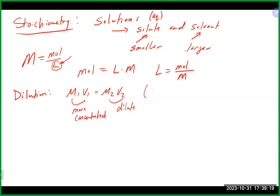There's a more generic version: C1V1 = C2V2, where C stands for concentration on both sides. Molarity is the most common, but you can use any concentration unit as long as the same units are on both sides — percent mass-to-mass or percent mass-to-volume, for example. This is also one of the only equations where you can leave the volume in milliliters, and it will work out correctly if both volumes are in milliliters.